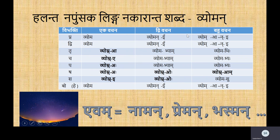The only change again is in the Prathama Vibhakti: it is Vyoma, Vyomani, Vyomani. Please note here, there is no Visarga. Why is this long A? Just like Phalani, you are elongating the Upadha, which is A here — you are changing it to long A: Vyomani, Vyomani. That is copied into the Dvitiya and also into the Sambodhana, so it becomes Vyoma, Vyomani, Vyomani.